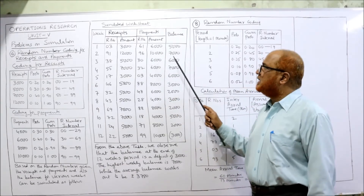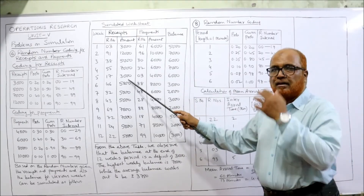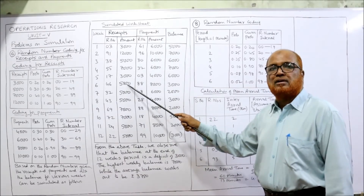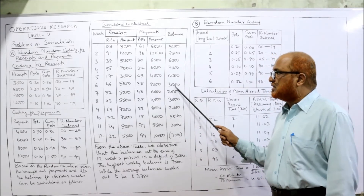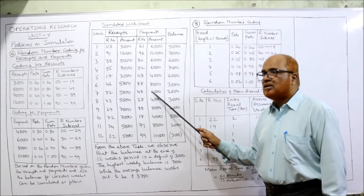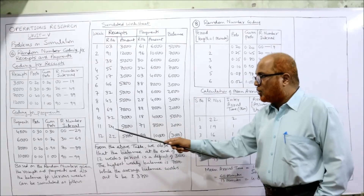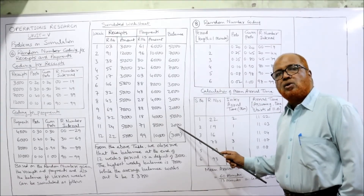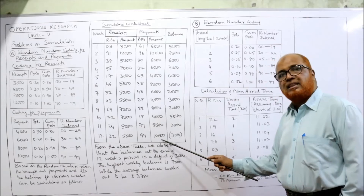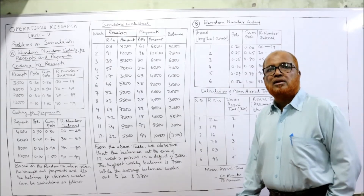Continuing the calculations: week four gives 6,000 plus 7,000 equals 13,000, minus 6,000 equals 7,000; week five: 7,000 plus 7,000 equals 14,000 minus 4,000 equals 10,000 — wait, correcting: it is 10,000 minus 4,000 equals 6,000; week six: 6,000 plus 5,000 equals 11,000 minus 8,000 equals 3,000; week seven: 3,000 plus 5,000 equals 8,000 minus 6,000 equals 2,000. For week twelve, opening balance is 2,000, plus receipts 5,000 equals 7,000, minus payment 10,000 gives minus 3,000 — a deficit, shown in brackets.